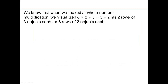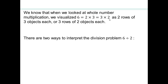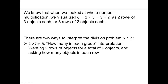When we looked at multiplication, we saw 6 as 2 times 3 — 2 rows of 3 objects, or 3 rows of 2 objects. There are two ways of interpreting division. For 6 divided by 2: one interpretation is '2 times what gives you 6?' or 'how many in each group if you want 2 groups?' So with 2 rows of objects totaling 6, each row has 3 objects — so the answer is 3. This is the 'how many in each group' interpretation.